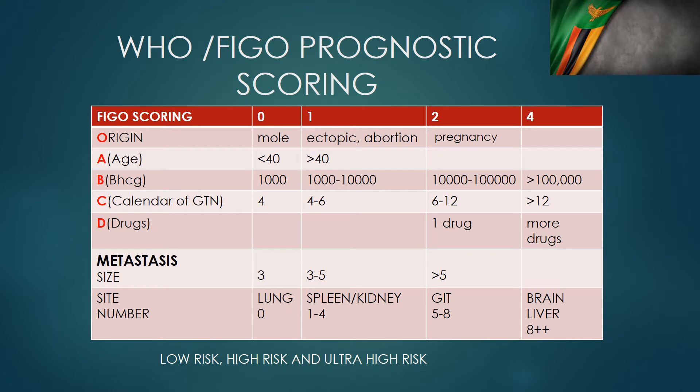This is my rearrangement of the WHO/FIGO prognostic scoring, designed to make it easy to remember all eight parameters and help take a proper history. The structure goes: first the Origin, then A, then B, then C, then D, and finally the metastasis parameters at the bottom.